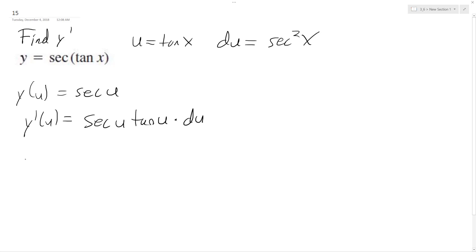So now we sub everything back in. y prime of x is going to be equal to secant of tangent of x times the tangent of the tangent x times du, which is secant squared of x.